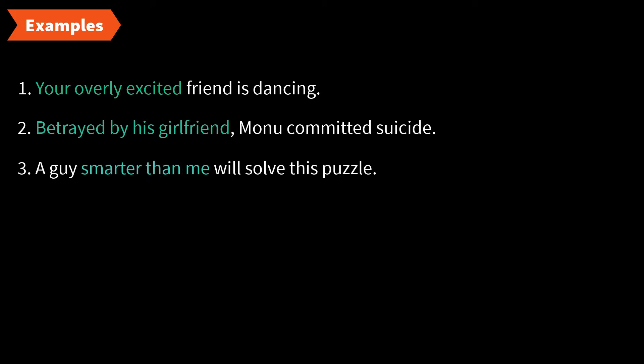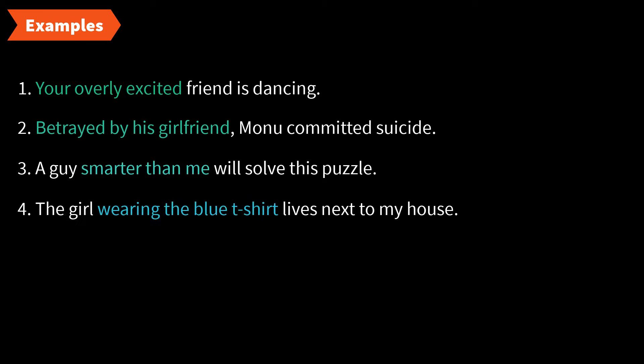Now let's look at adjective phrases coming in the middle of a sentence. 'A guy smarter than me will solve this puzzle.' In this example, the adjective phrase is 'smarter than me' — not any guy, but a guy smarter than me. 'Smarter than me' is giving information about the noun 'guy,' helping us identify the person. It comes in the middle of the sentence, just after the noun it modifies.